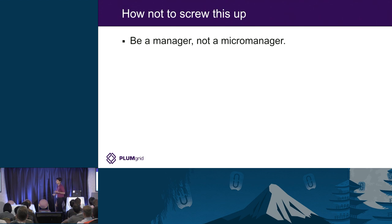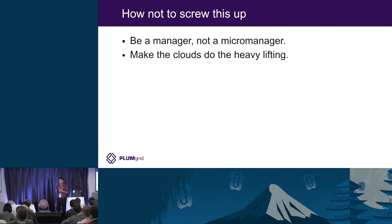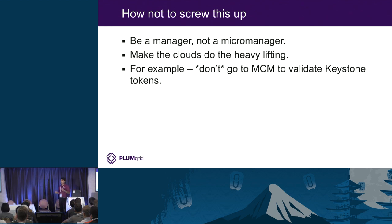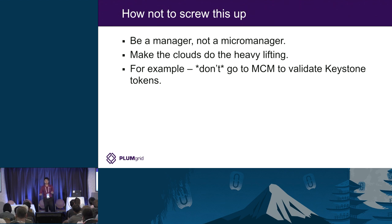Here are some thoughts on how not to screw this up when making a multi-cloud manager. Number one: be a manager, not a micromanager. Make the clouds do the heavy lifting. You want all the heavy work to be done by the clouds themselves. Don't go to the multi-cloud manager to validate Keystone tokens, or to handle ARP responses, or to do DHCP allocation — none of that. All of that needs to be done inside your respective clouds. You do, however, use the multi-cloud manager for configuration management.